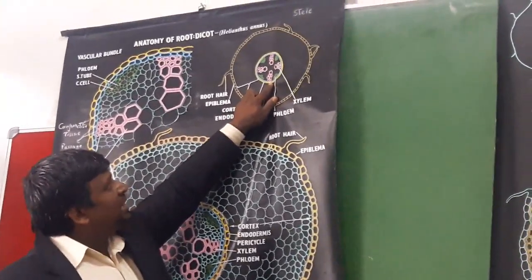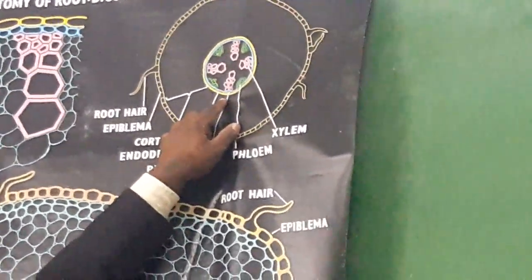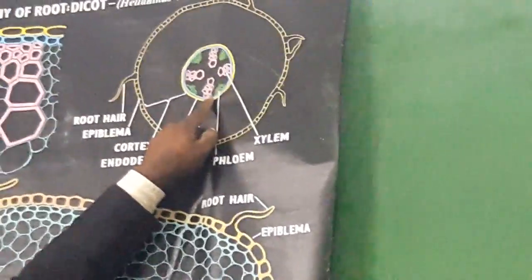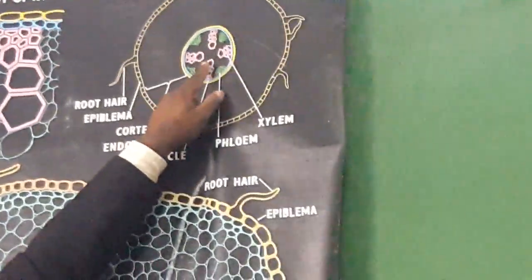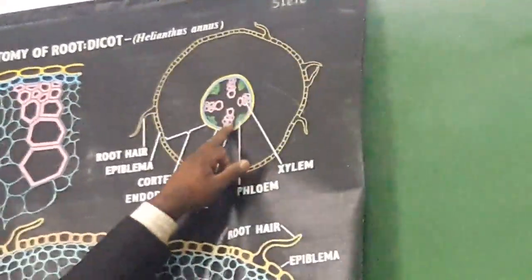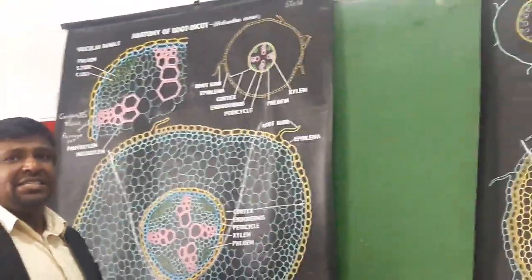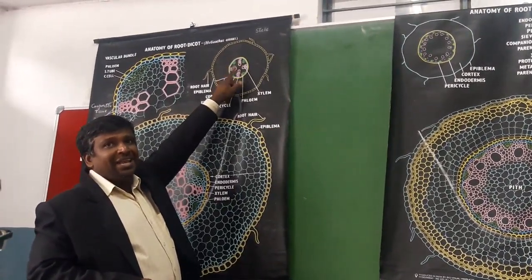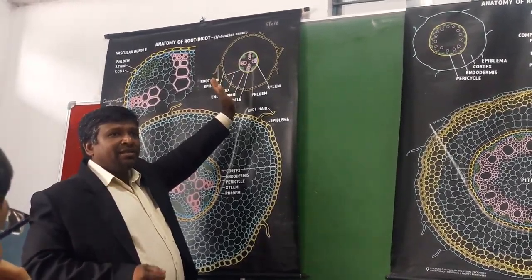The innermost blue-colored layer is the pericycle — a single layer is present. The pink-colored elements are the xylem. They have proto-xylem towards the endodermis and meta-xylem towards the pith or medulla. We call this arrangement as exarch. Alternating to the xylem are the phloem elements. Xylem and phloem alternate with each other.